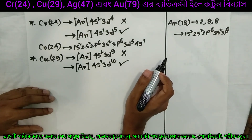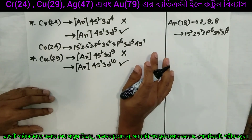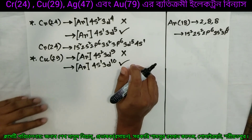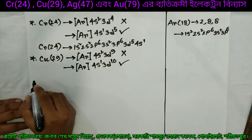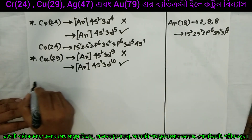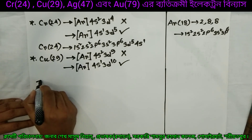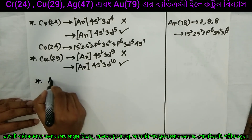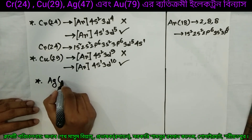Now we have 9 electrons in the d orbital. This means silver, atomic number 47. We can see silver's electrons. Silver, 47.